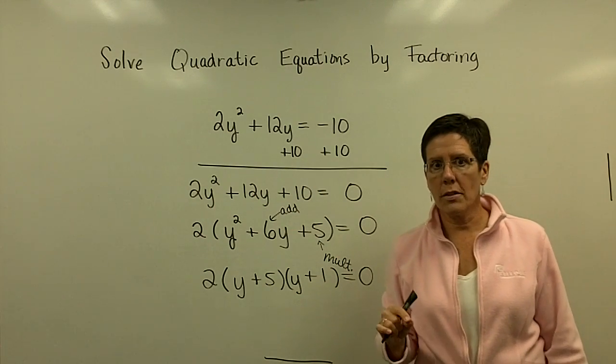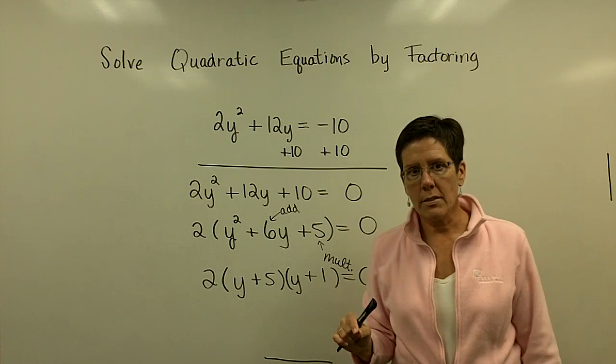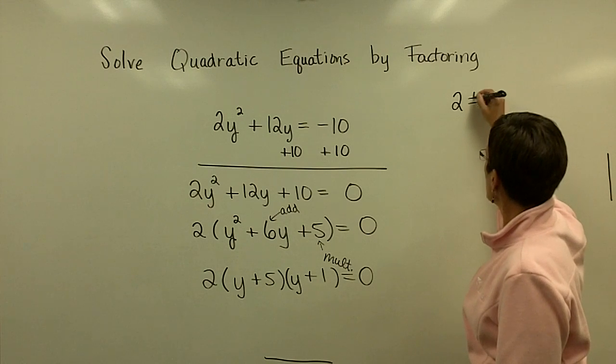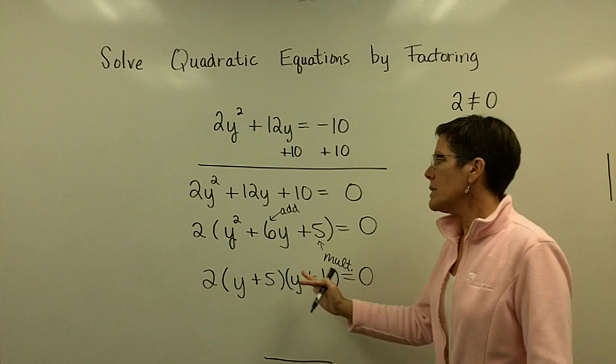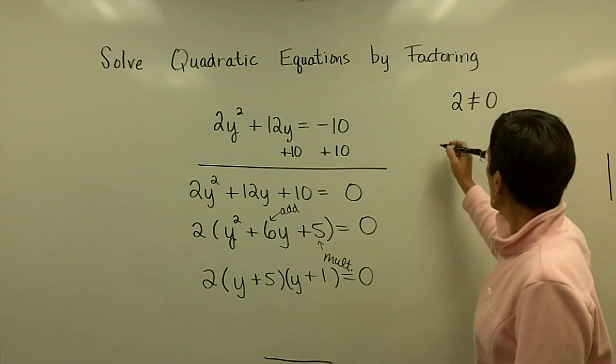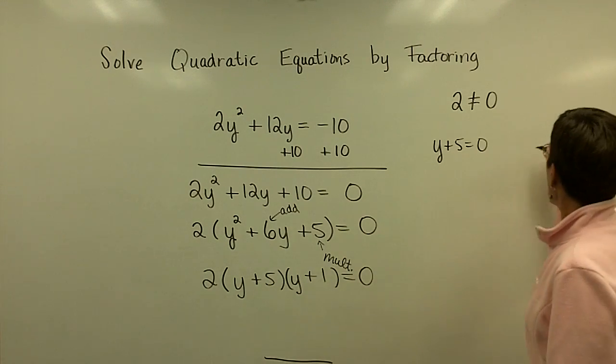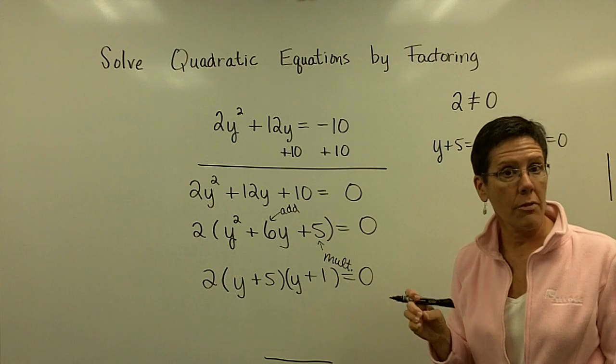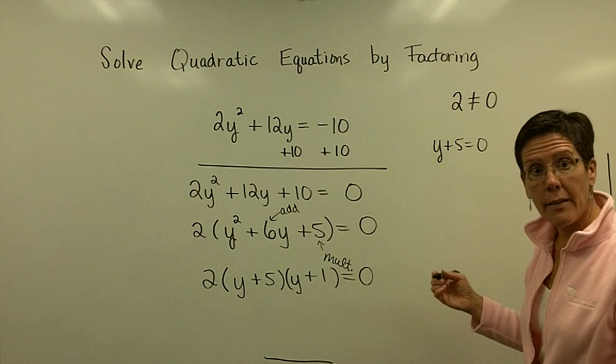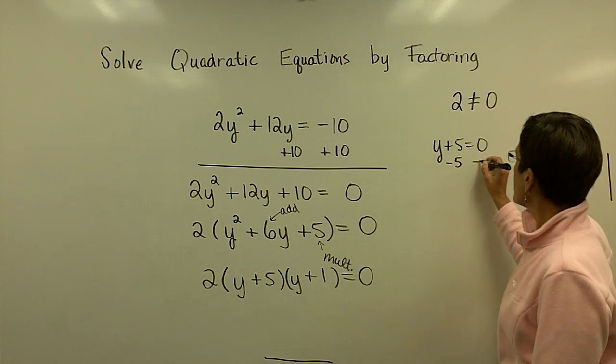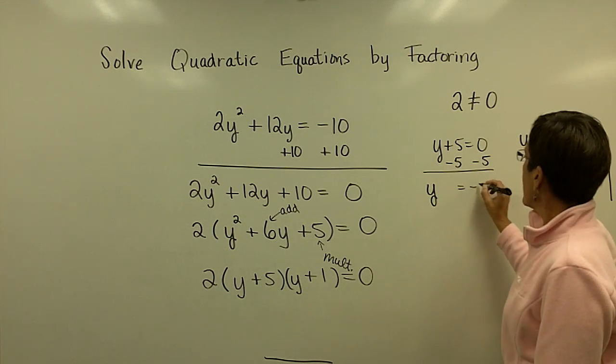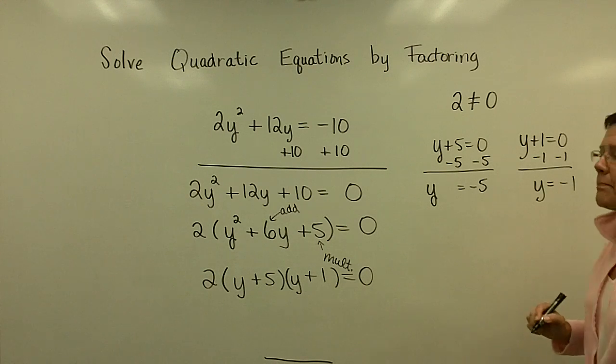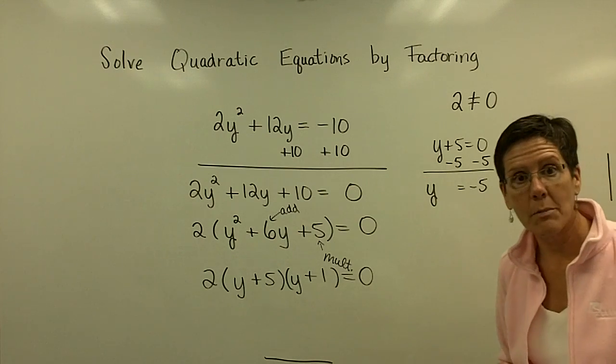This property for solving equations is called the zero product rule, but you only set those products that have the variable in them equal to 0. You don't set this 2 equal to 0 for two reasons: it doesn't have the variable, and it's not true. 2 does not equal 0. It only helped us in making this a little bit easier to factor. So what I do is I set the y plus 5 equal to 0 right here, and then I set the y plus 1 equal to 0. I'm subtracting 5 from both sides, and one of my answers is a negative 5. And here I'm subtracting 1 from both sides, and one of my answers is a negative 1. They should both check, and they do.